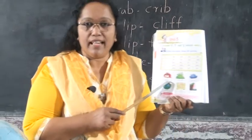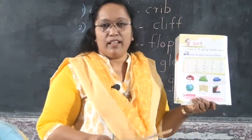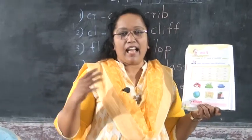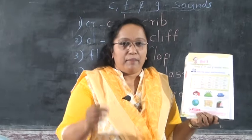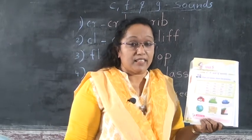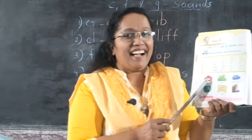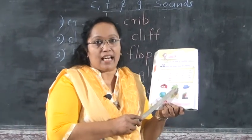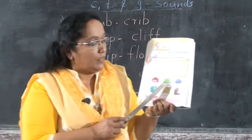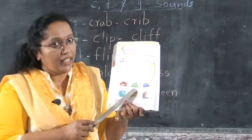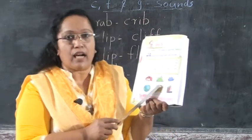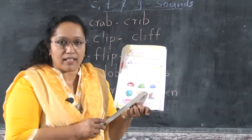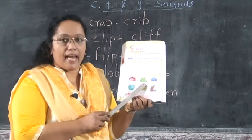Do you like crab curry? It's very delicious — very rich in vitamins also. I like very much crab curry. This is not a cookery show! Next — what is this? Grass. Cow eats grass. What's the color of the leaf? Green. Write the spelling grass here: G-R-A-S-S. Write fast. G-R-A-S-S.